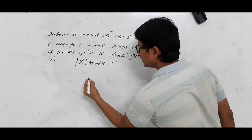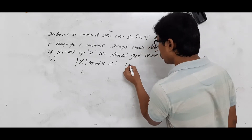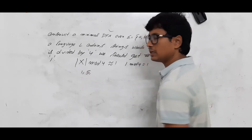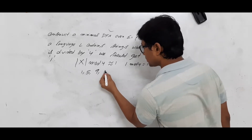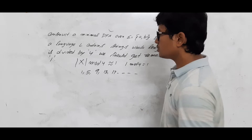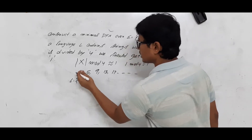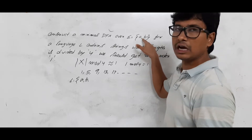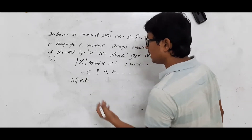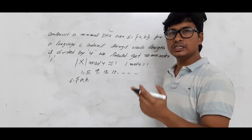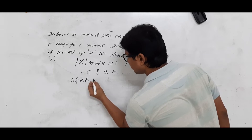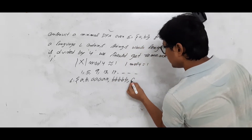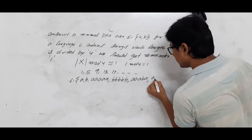So what are the string lengths it will accept? It will accept strings whose length is one, because 1 mod 4 = 1. It will also accept lengths five, nine, thirteen, seventeen, and so on. The strings of length one are just 'a' and 'b'. For length five, you will get 2^5 = 32 strings; for example: 'aaaaa', 'bbbbb', 'aaaab', 'aaaba', and so on.